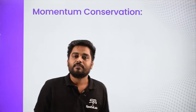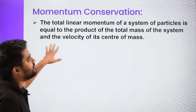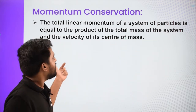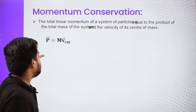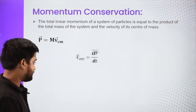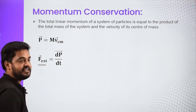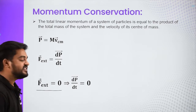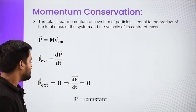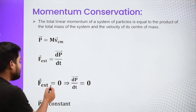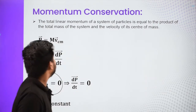Next heading is momentum conservation. If external force is zero, then the total linear momentum of a system of particles is equal to the product of the total mass of the system and the velocity of the center of mass. We know that linear momentum equals total mass into velocity of center of mass. And F external, from the original definition of force as rate of change of linear momentum, is dp by dt. If F external is zero, then dp/dt is zero, meaning the change in momentum is zero — momentum remains a constant quantity. Linear momentum will not change when F external is zero, and this is called momentum conservation.